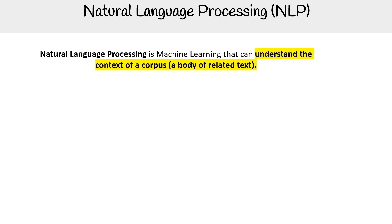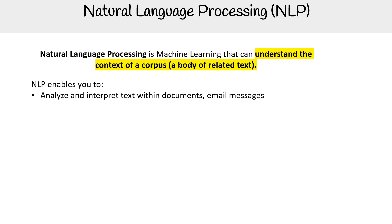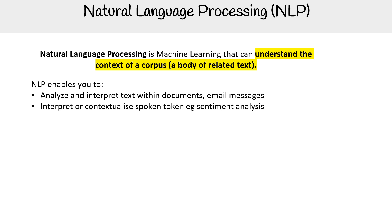Natural language processing, also known as NLP, is machine learning that can understand the context of a corpus — corpus being a body of related text. NLP enables you to analyze and interpret text within documents and email messages, and interpret or contextualize spoken tokens.